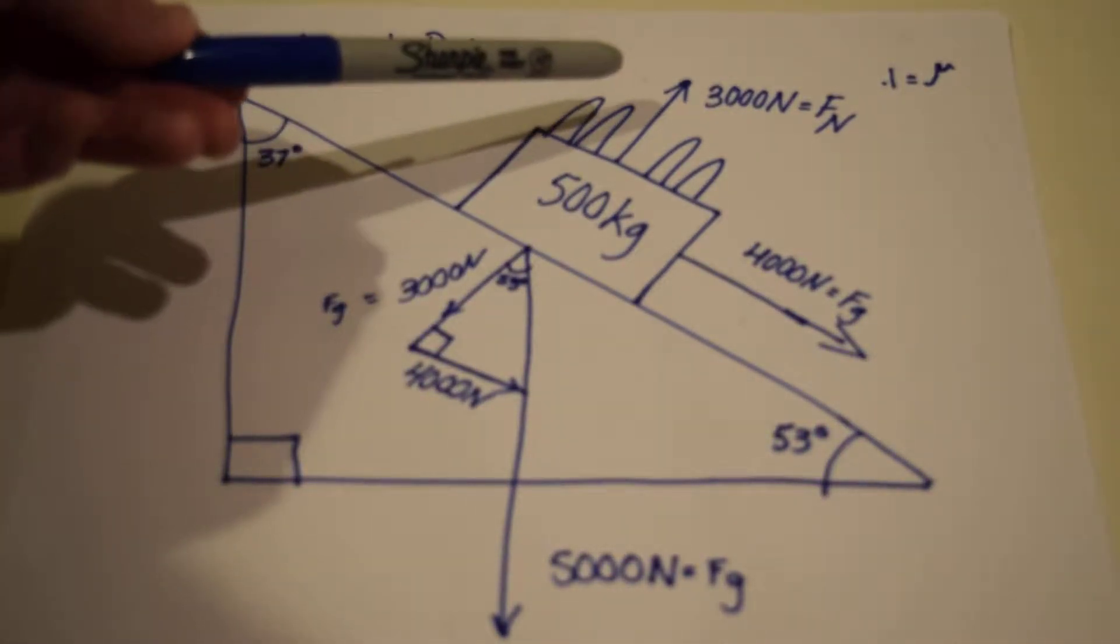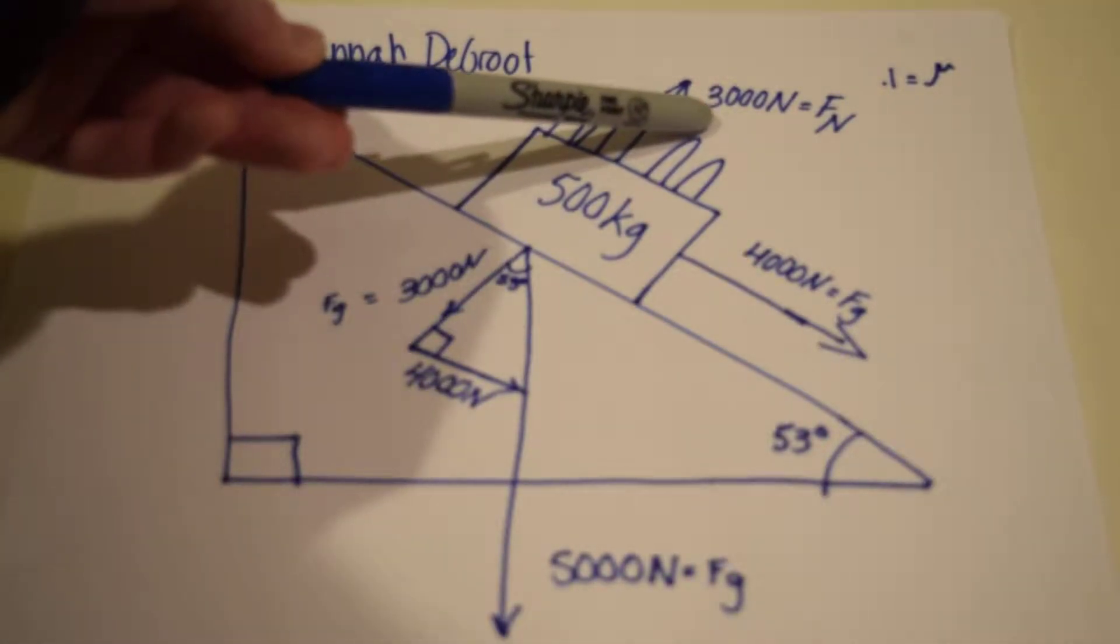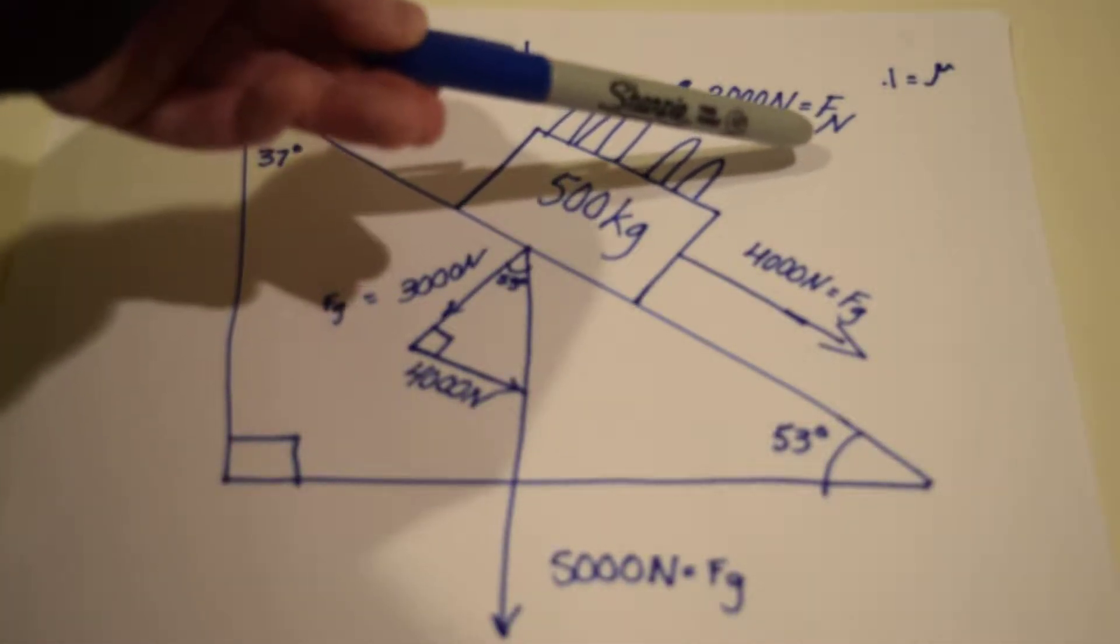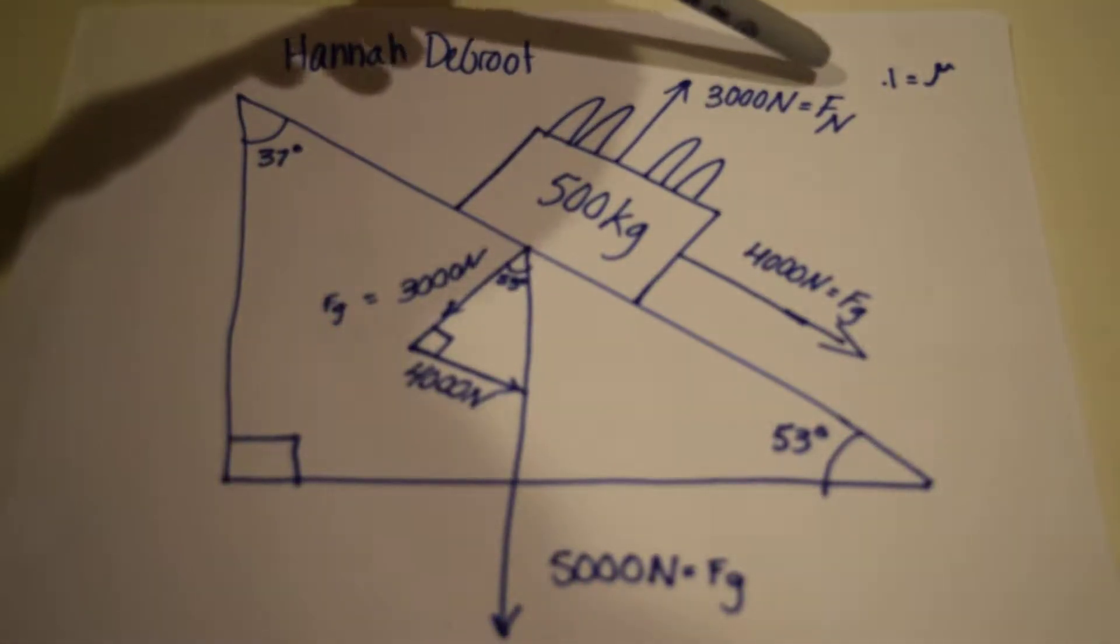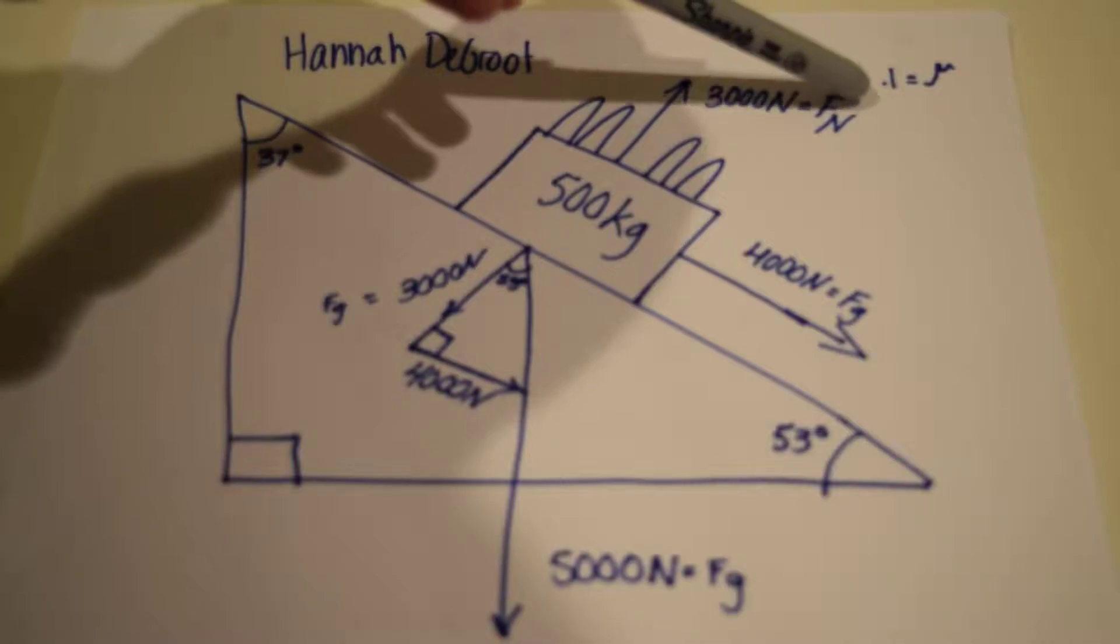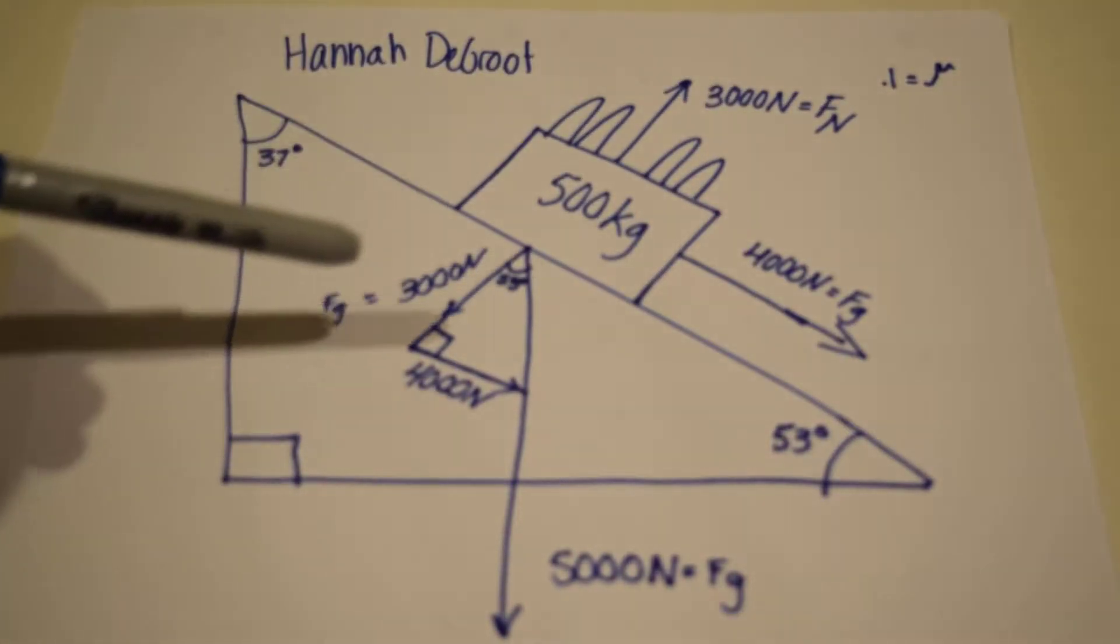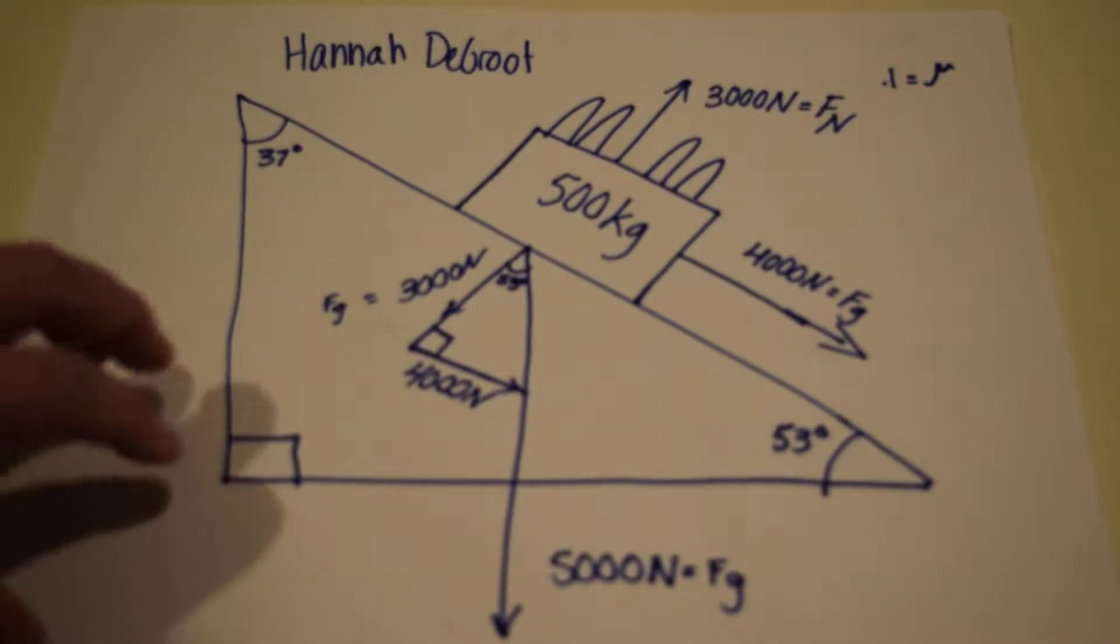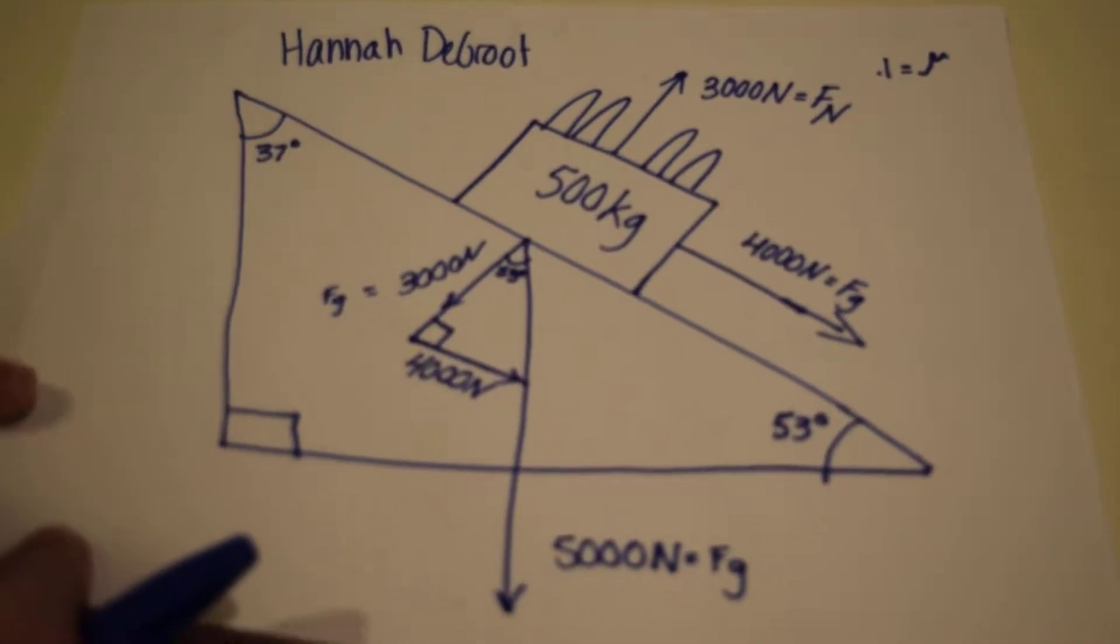So the normal force is about 3,000 newtons and I also gave us we should expect that the coefficient of friction is about 0.1 so now we can find the friction force.